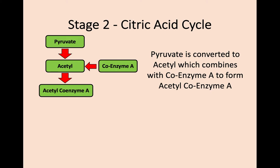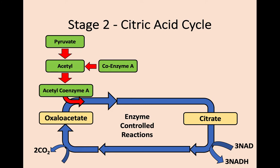To begin, the pyruvate produced in glycolysis goes through a few changes before it's ready for use in the citric acid cycle. First, pyruvate is converted to a molecule called acetyl. This acetyl molecule then combines with a coenzyme called coenzyme A, resulting in a new molecule called acetyl coenzyme A. Next, this acetyl coenzyme A combines with a molecule called oxaloacetate to form a molecule of citrate — hence the citric acid cycle.